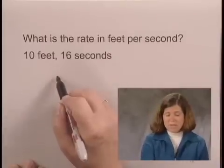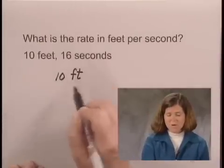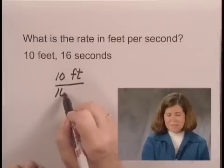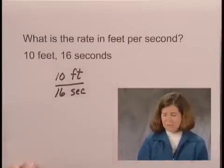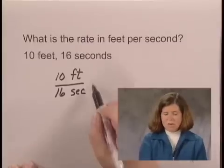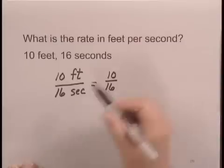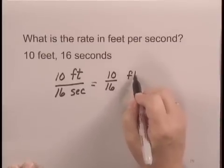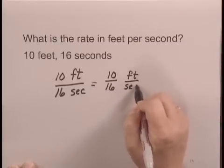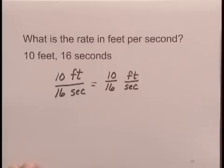So we write 10 feet in the numerator and 16 seconds in the denominator. Then we can treat 10 over 16 as a ratio, and feet per second as a ratio, which gives us the units for the rate.